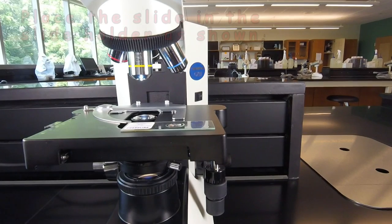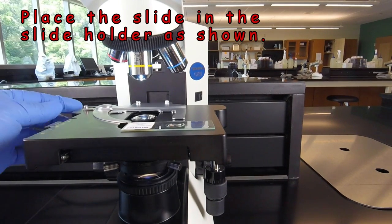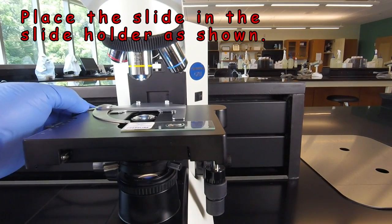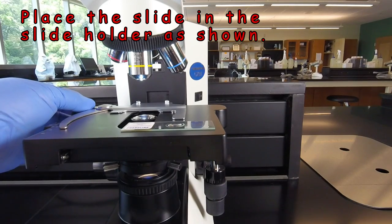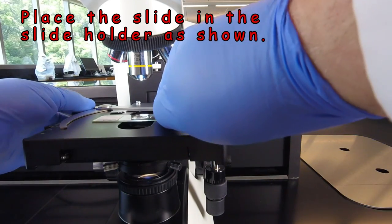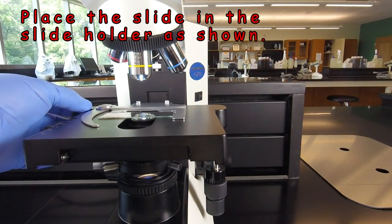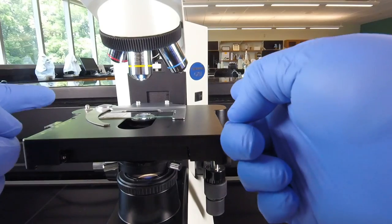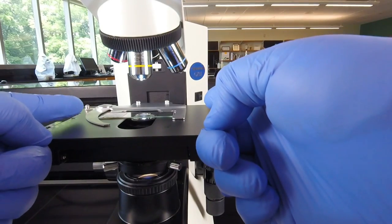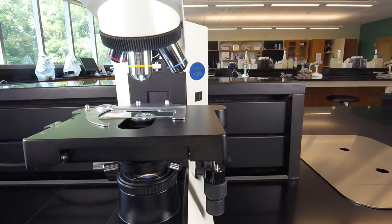Then to place the slide in the slide holder, there's a little knob on the left-hand side here. If you pull that back, that opens up an arm, so you can take the slide and slide it right into this little right angle and then release the arm. And in that way, the slide is being held by the two sides of the slide holder.